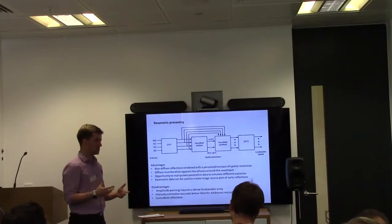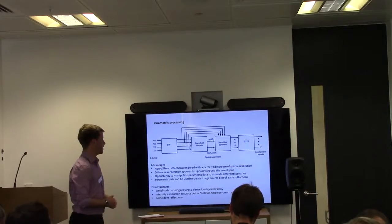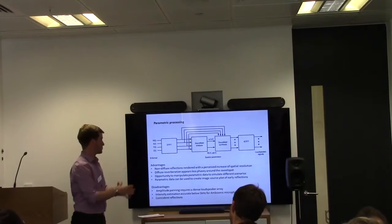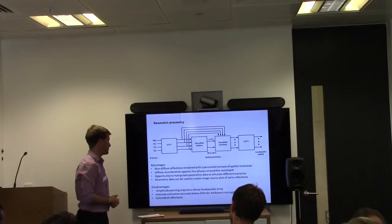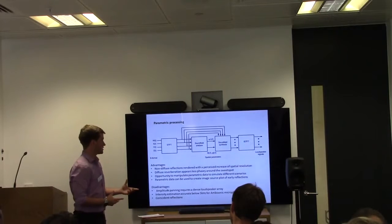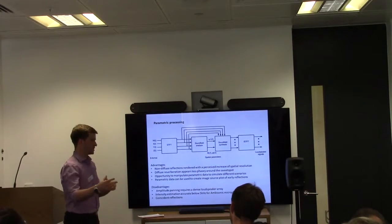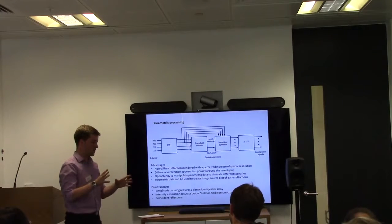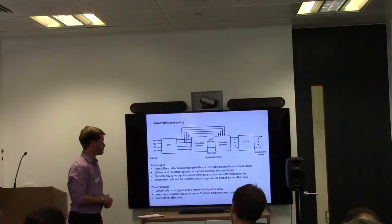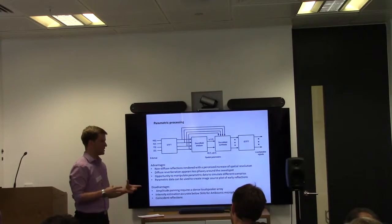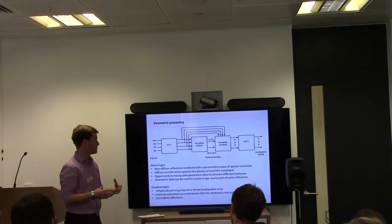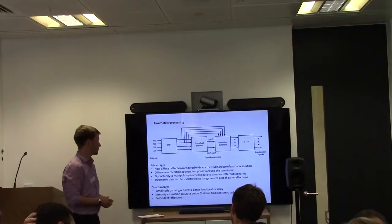Musicians are freed up to play without having to stay still the entire time. In addition, the use of amplitude panning for the reflections results in a perceived increase in spatial resolution. There are a few other advantages to this technique — there's an opportunity to manipulate the parametric data to, for instance, re-spatialise a reflection, change the diffuseness, or filter it out completely, which means it provides a much more flexible system for use in research. Also, the parametric data from the analysis can be used to produce an image source plot, which allows us to analyse the temporal and spatial distribution of the reflections.